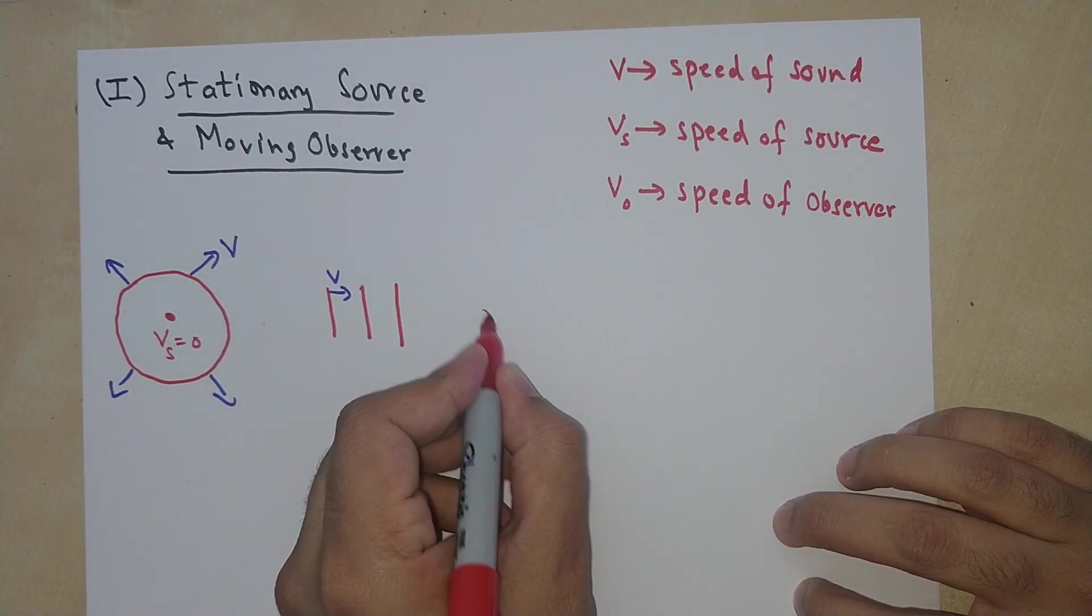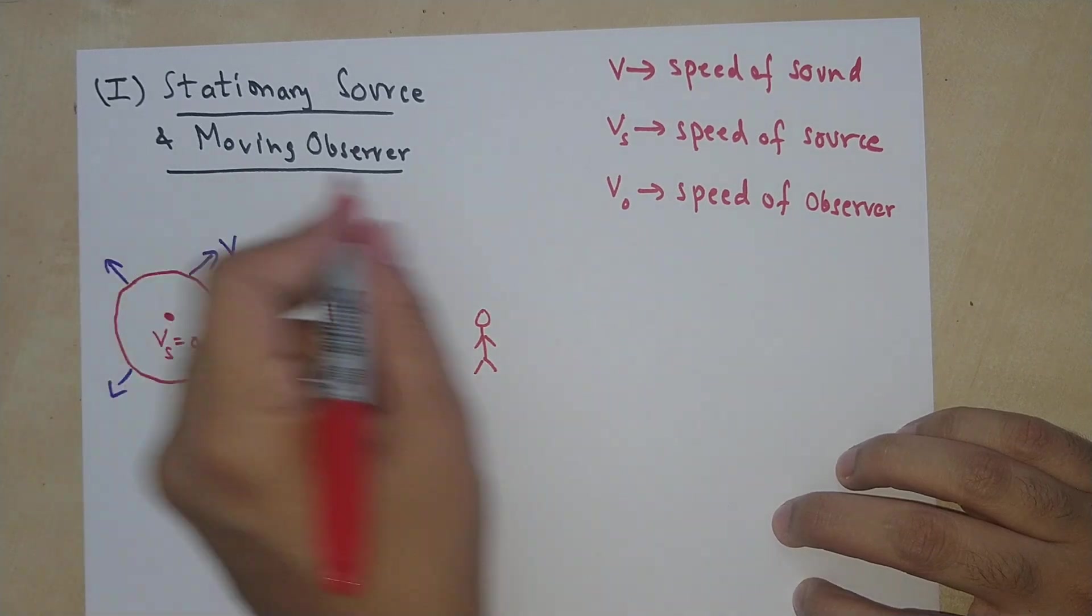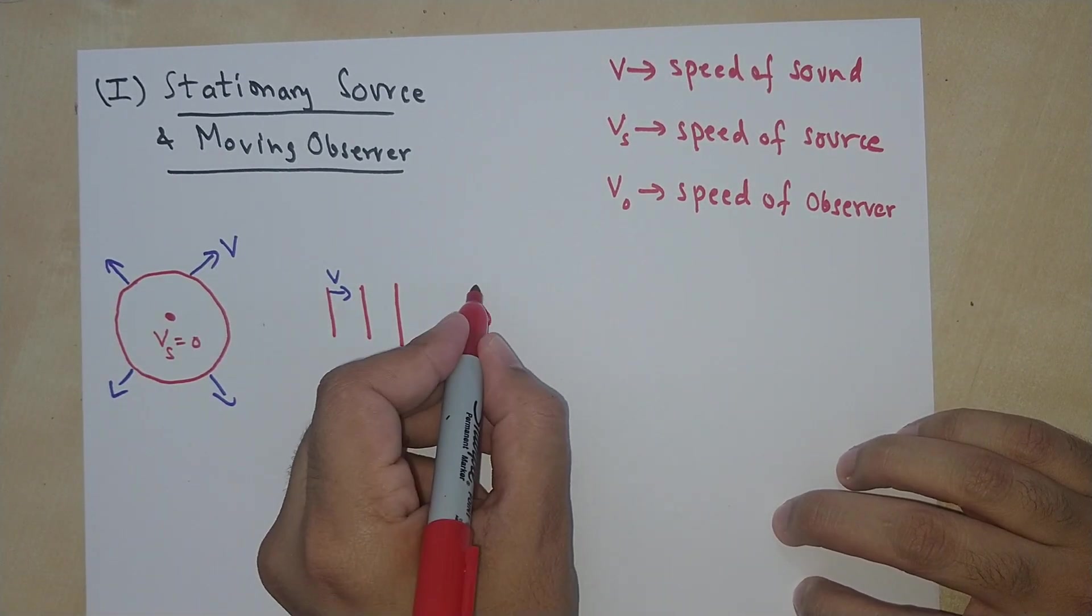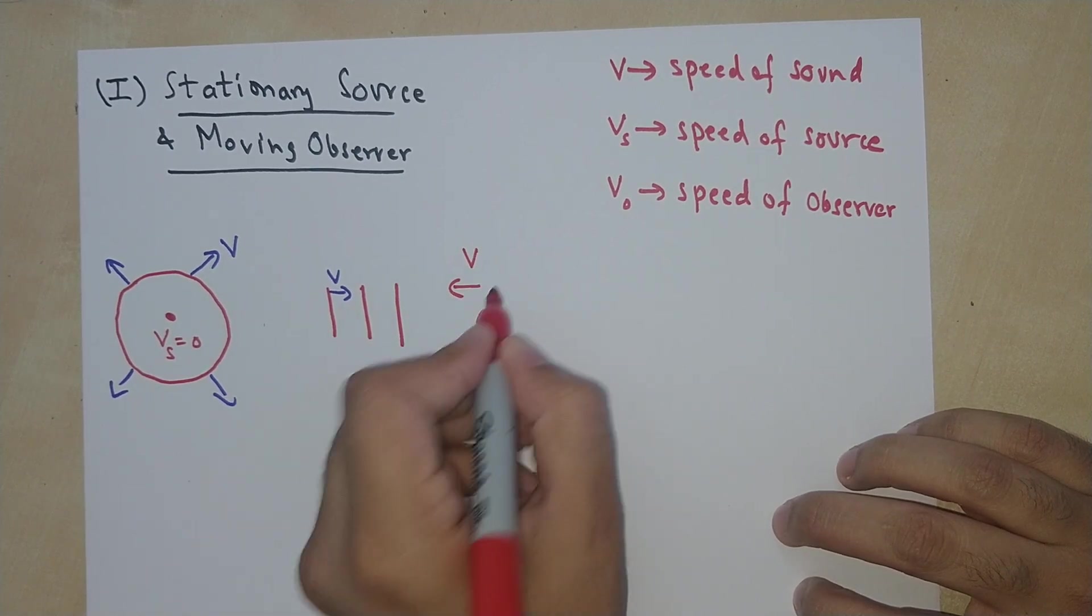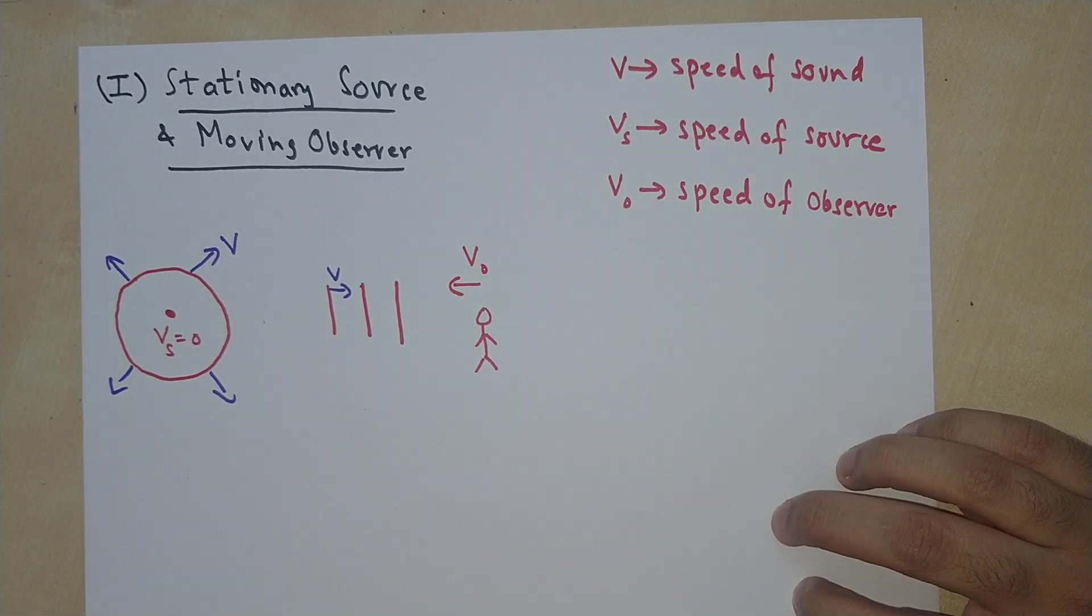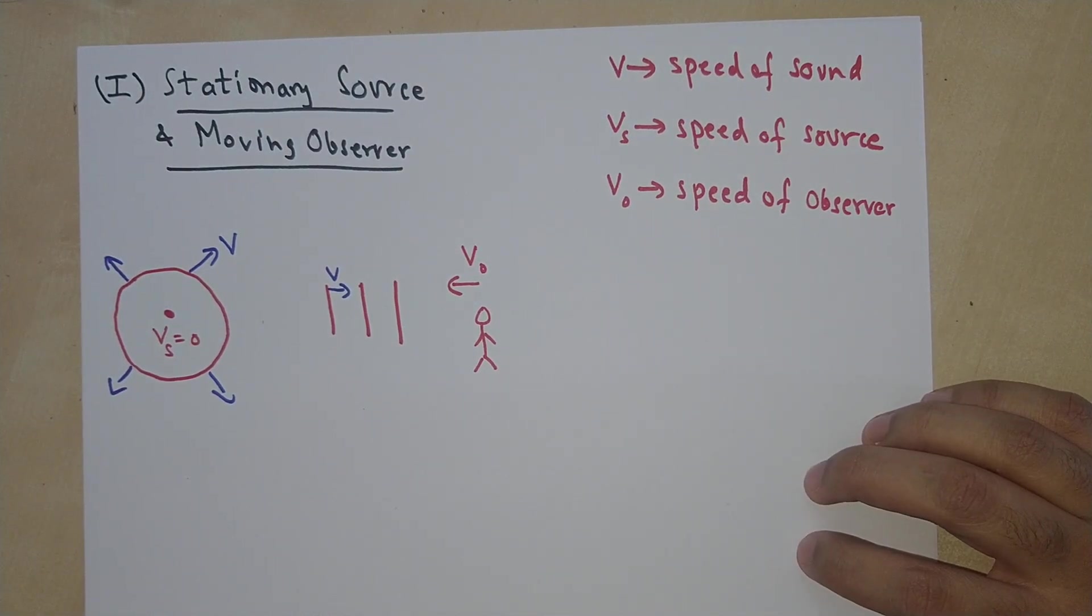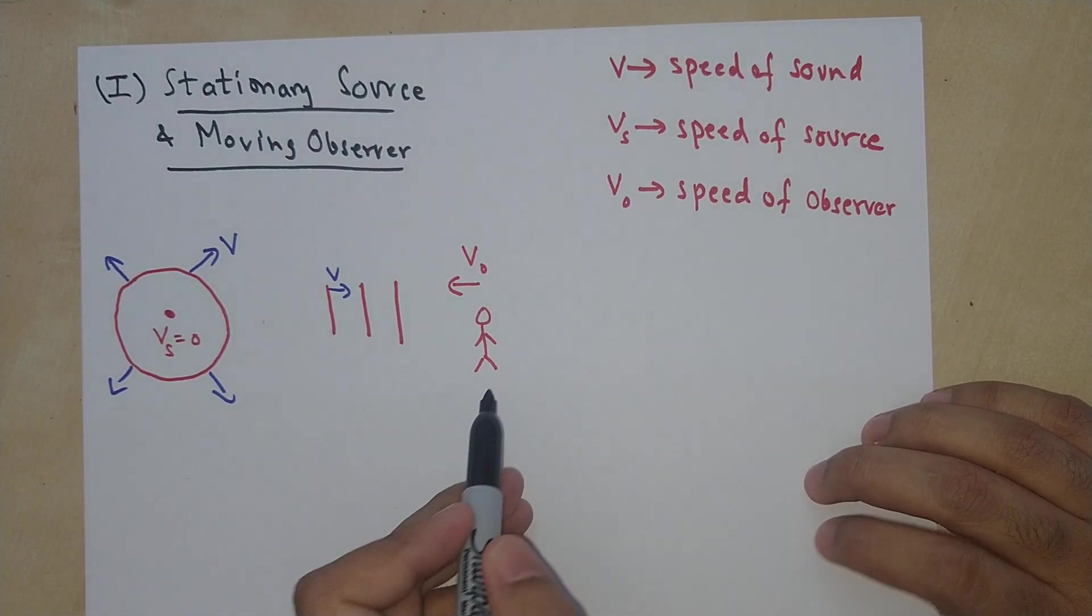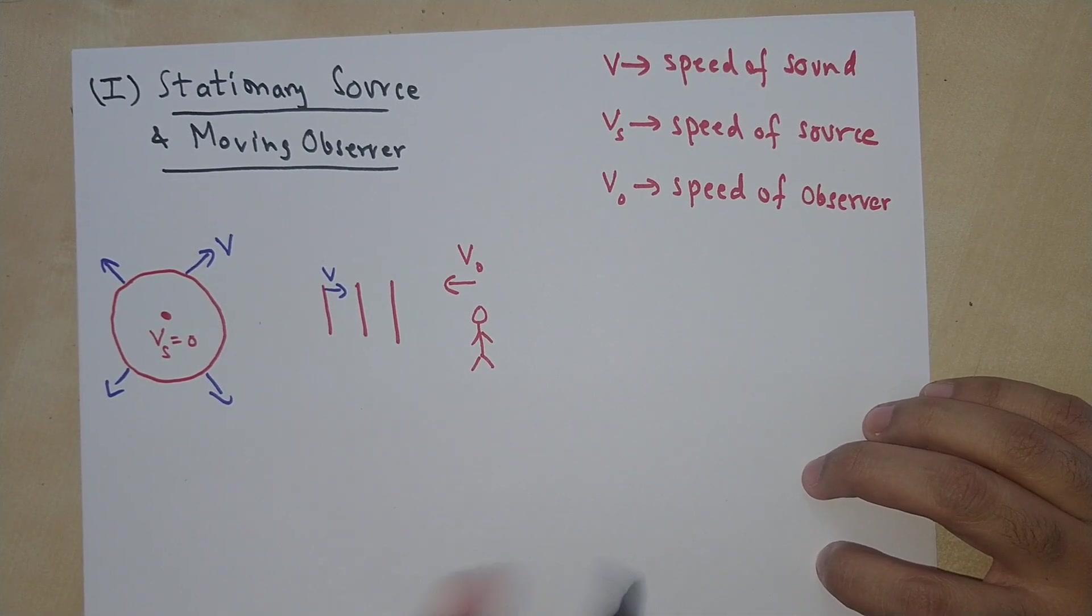Now let's say that the listener or the observer is over here, moving towards the source. So this is the speed of the observer. Now let's think about it. As the observer is moving towards the source, we can see that...